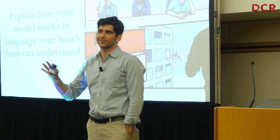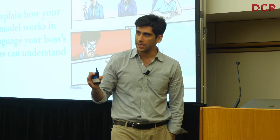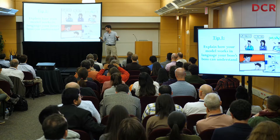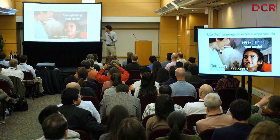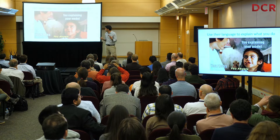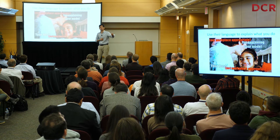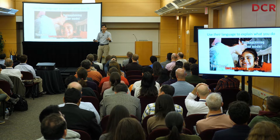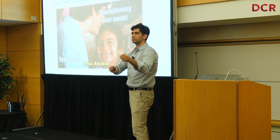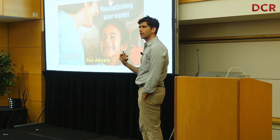The first piece of advice: you need to be able to explain how your model works in language — not just how you understand it or how your boss understands it, but how your boss's boss understands it. You can't just throw around buzzwords like CNNs or RNNs. You have to explain them simply — like the grandmother test. But it's not just about avoiding acronyms; every culture has its own way of doing things. You have to bridge into that machine learning topic using their own language.